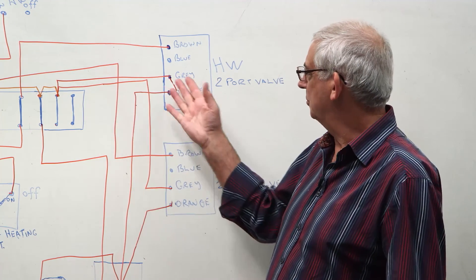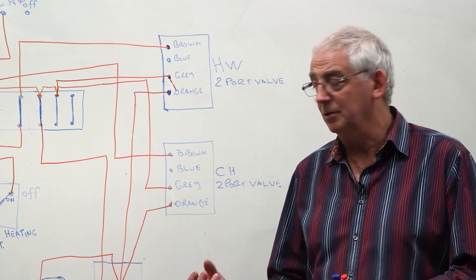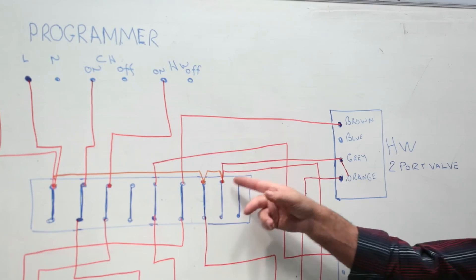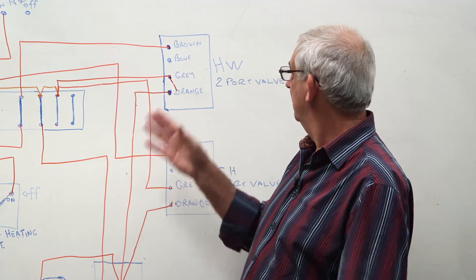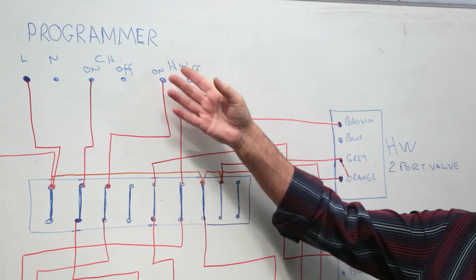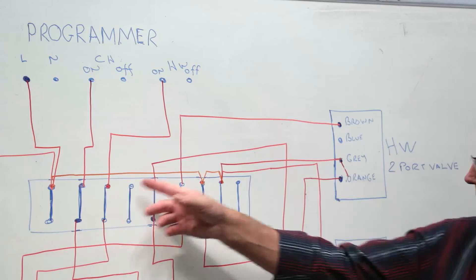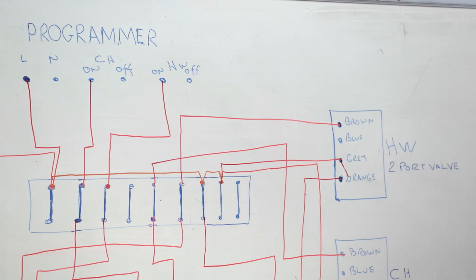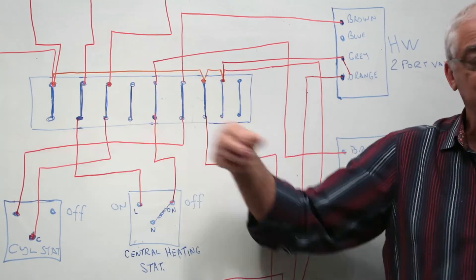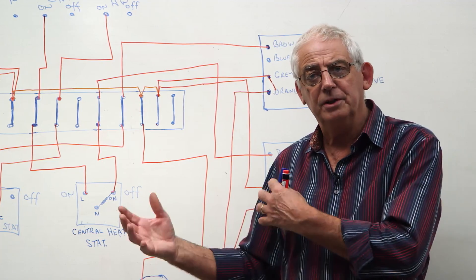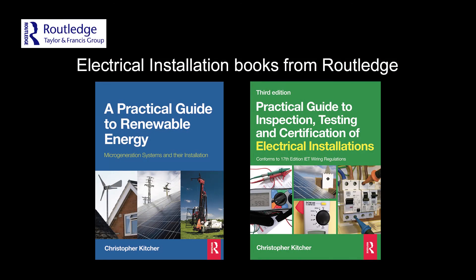As already explained, the grey cable of the motorized valve needs to be live when the central heating or the hot water is calling for heat. For my grey, I've just gone to a permanent live, which is fine. It'll work perfectly well. You could also, if you wanted to, of course, for the hot water two port valve, just connect it to the on of the programmer. So, when the programmer is calling for heat for the hot water, the grey becomes live. The same would apply to the central heating. I've got a permanent live to my grey, but of course, I could, if I wanted to, connect it to the same connection as the on terminal for the programmer. Whichever way you do it, it's still going to work. The choice of how you do it is entirely down to you.